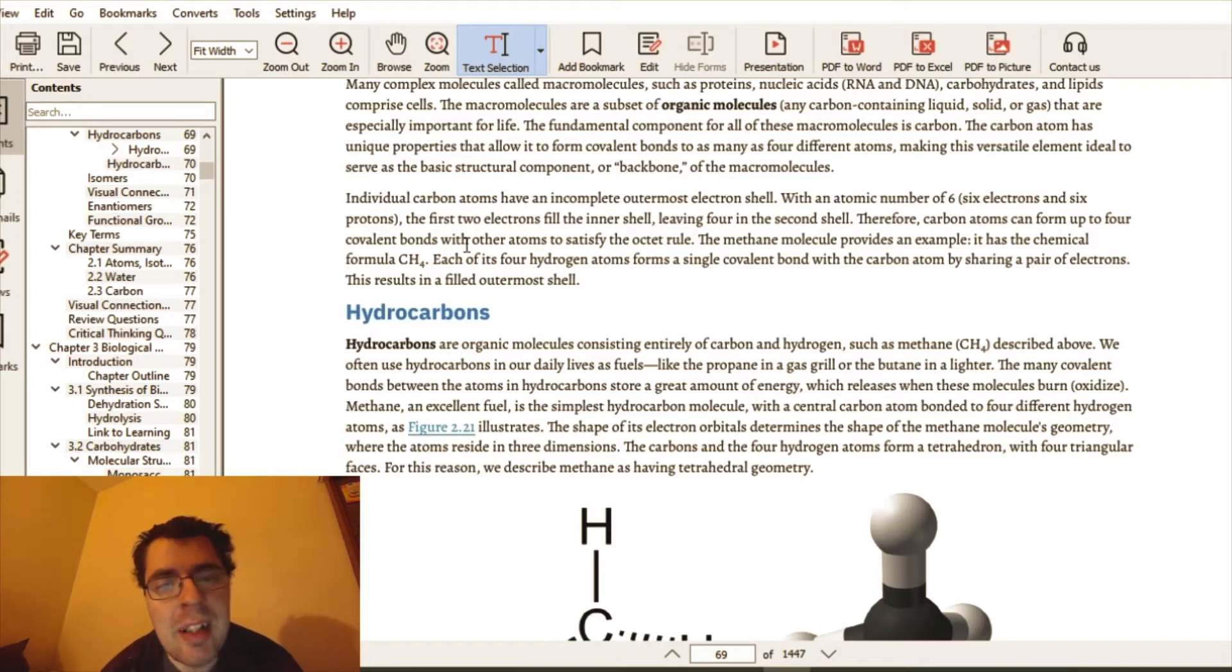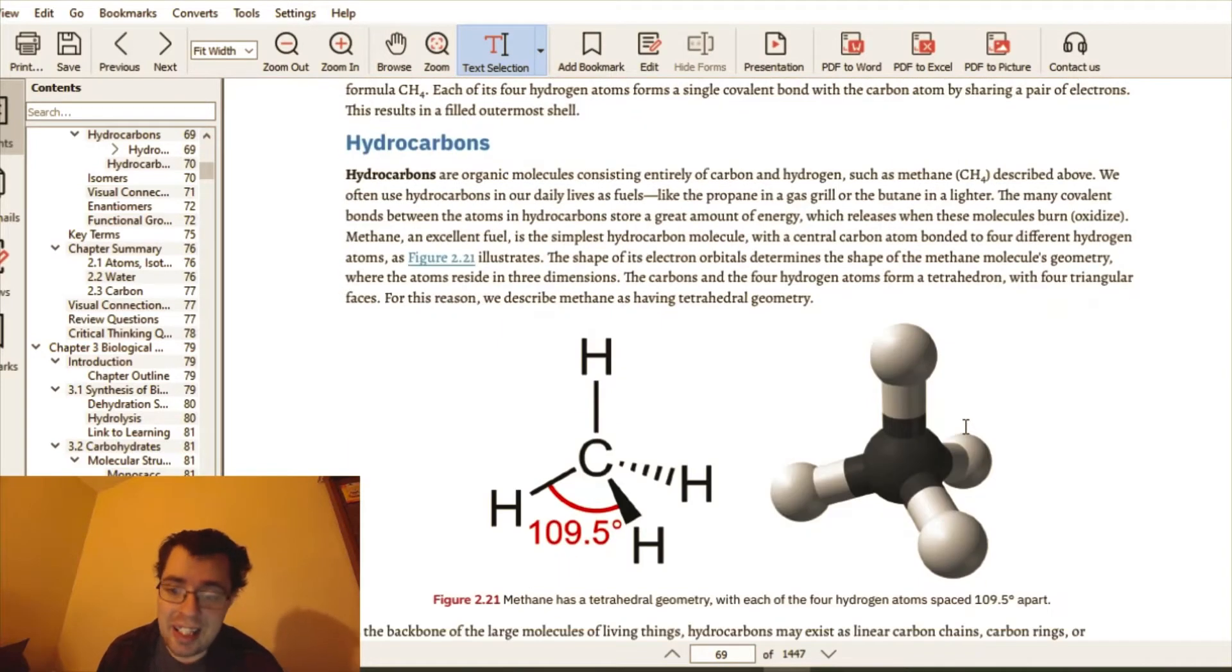Individual carbon atoms have an incomplete outermost electron shell, which is what I explained earlier. With atomic number of six, six electrons versus six protons, the first two electrons fill the inner shell, leaving four in the second shell. Therefore, carbon atoms can form up to four covalent bonds with other atoms to satisfy the octet rule. And again, that is essentially why it is so versatile.